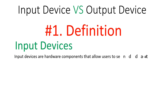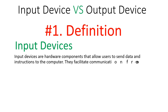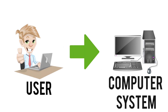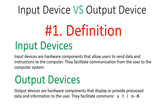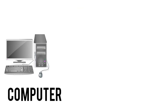Input devices are the hardware components that allow users to send data and instructions to the computer system. They help to enter data and instructions and facilitate communication from the user to the computer system. Output devices, on the other hand, are the hardware components that display or provide processed data and information to the user, facilitating communication from the computer to the user.